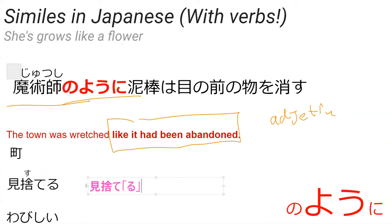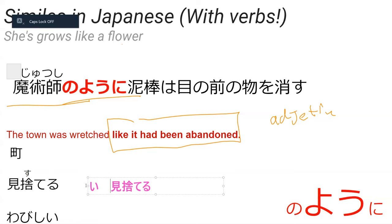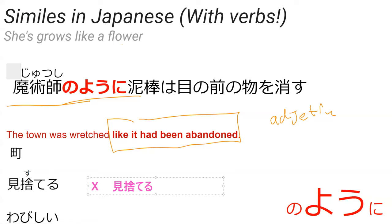The student suggests 'misute keshita,' but that's incorrect — 'keshita' doesn't belong here. 'Misuteru' means X forsakes Y, but we want to say X is forsaken, so it has to be in passive form. We need to conjugate 'misuteru' into passive form — so what is passive form?